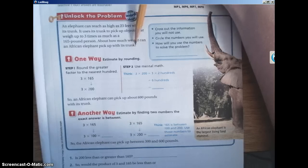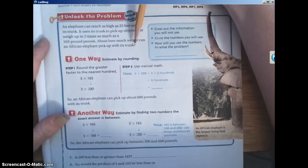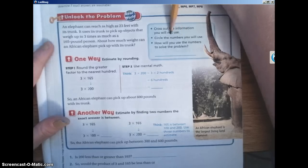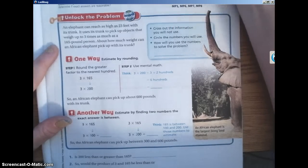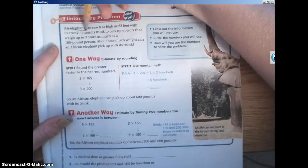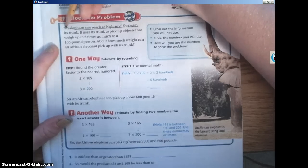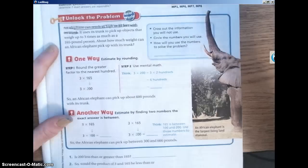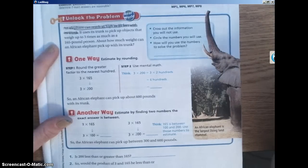The first thing we're going to do over here in this blue box is we're going to cross out the information that we will not use. We actually don't need this first sentence. An elephant can reach as high as 23 feet with its trunk. We're not going to be using that information to find our answer.